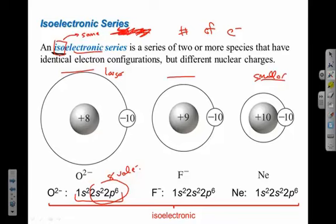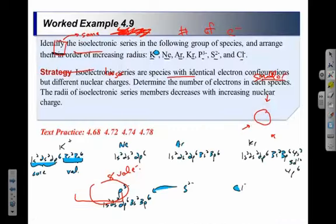It has to do not just with where the electrons are but how many protons there are. When there's a greater quantity of positive charge, that attracts the electrons closer — that's why one is smaller. For isoelectronic atoms, everything is the same except the number of protons, so that's the only factor we can use to determine which will pull electrons closer.